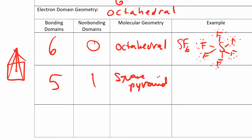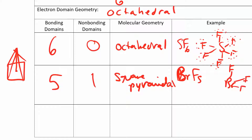Square pyramidal, if you want to add that suffix at the end — different books call it different things. An example is BrF5. So you have your bromine, you have five fluorines, and down there you have lone pairs and six dots around each fluorine. Because of that lone pair, that's what makes it a square pyramid.